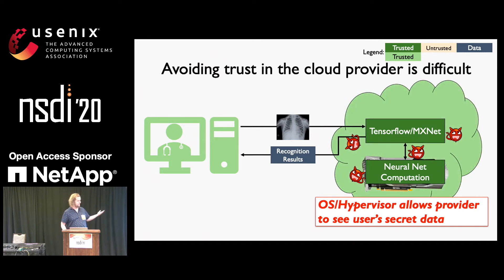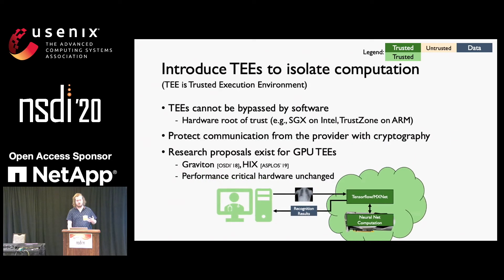Things in green are trusted — there's a legend in the top right corner. If the cloud provider controls the operating system and the hypervisor, then we need some help from hardware in order to realize this vision of an untrusted cloud. Recently, CPUs have been outfitted with something called a trusted execution environment. Trusted execution environments are isolation boundaries that hardware puts up which software can't cross. Users communicate with these TEEs over protected channels, so the cloud provider can't see what's going on inside the environment or the plaintext of the communication.